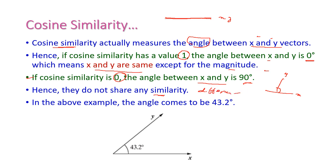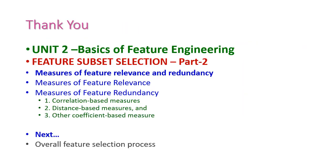If the cosine similarity is 1, the angle between X and Y is 0 degrees — both lie on the same axis and the values are same except magnitude. If cosine similarity is 0, the angle is 90 degrees, meaning the vectors are perpendicular and completely independent. In our example, the degree is 43.2 degrees. So far we have seen the measures of feature relevance and feature redundancy, including correlation-based, distance-based, and other coefficient-based measures. In the next class we will see the overall feature selection process.